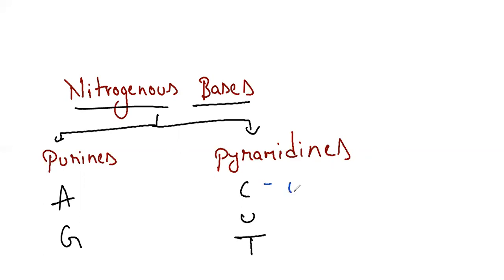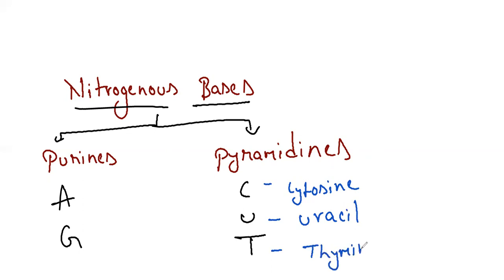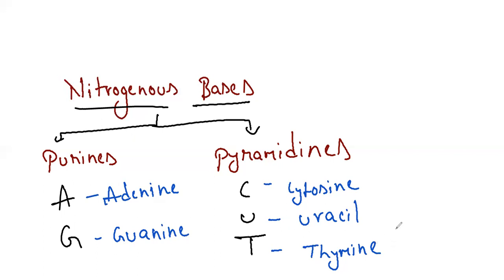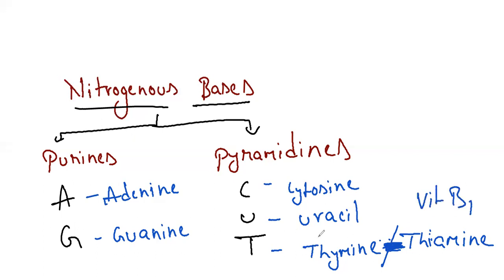And C for cytosine — note that cysteine is an amino acid while cytosine is a pyrimidine nitrogenous base, so you have to find the difference. U for uracil, T for thymine. Adenine and guanine are purines; cytosine, uracil, and thymine are pyrimidines. And don't forget — when writing thymine, Vitamin B1 is also called thiamine. Both spellings look similar but both are different — this is a nitrogenous base and that is Vitamin B1.